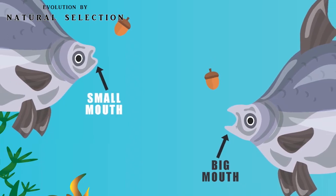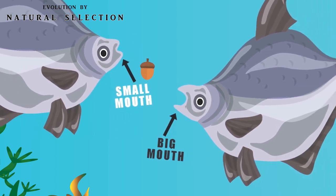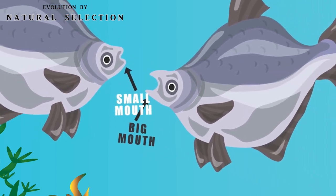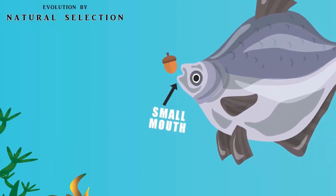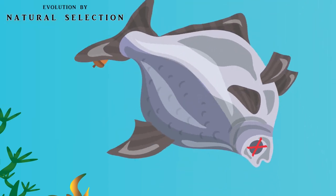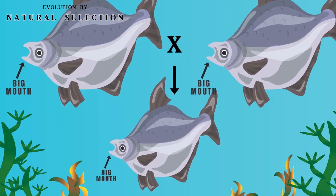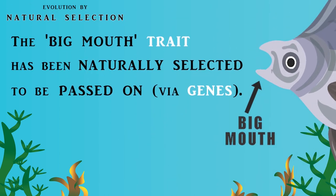There are a few fish in this population with mouths big enough to eat the big nuts, and the fish with the big mouth trait are able to eat and survive, while the fish with the smaller mouths starve and are unable to survive. The genes that coded for the trait of a big mouth in the survivors are likely to be passed along to future generations.